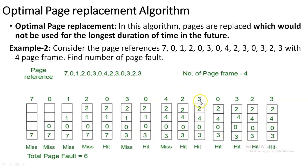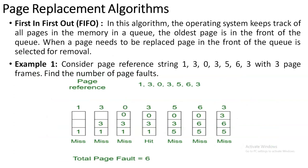Finally, we calculate the total page faults by counting the number of misses. There are six misses, so the total page fault for the Optimal Page Replacement example is also six. In this lecture we covered First In First Out and Optimal Page Replacement. In the upcoming video, you will see the algorithms for Least Recently Used and Most Recently Used. Thank you.